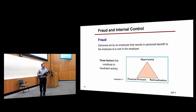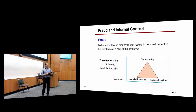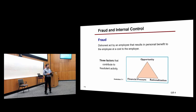Fraud usually involves what we call the fraud triangle. There are three factors necessary for any fraud to occur. First, there must be an opportunity. For example, an employee who wants to steal money from the company safe — that opportunity must exist, such as when the safe is accessible.